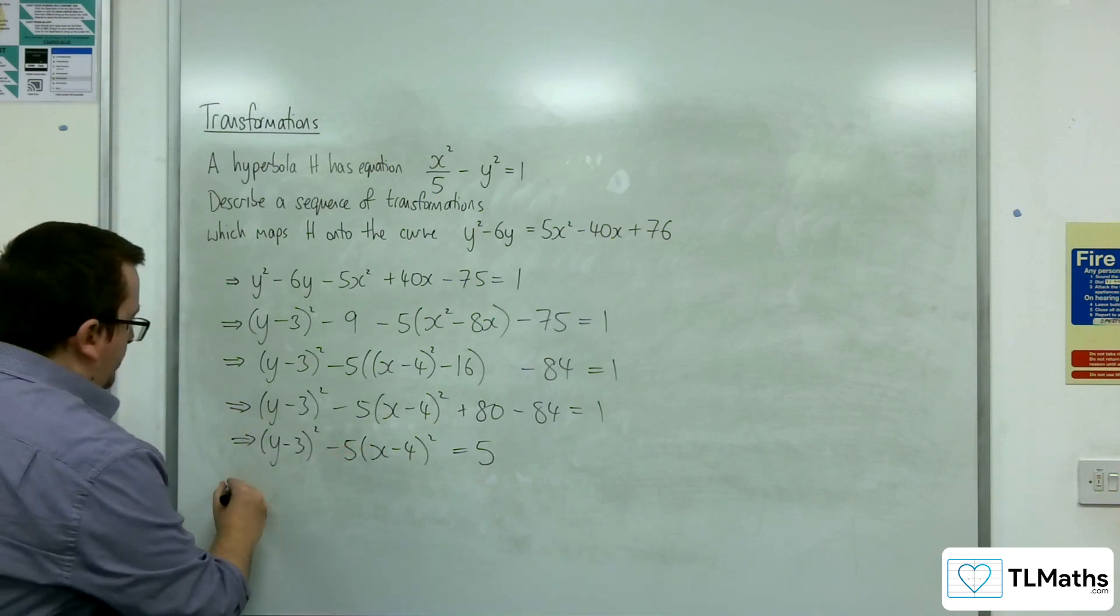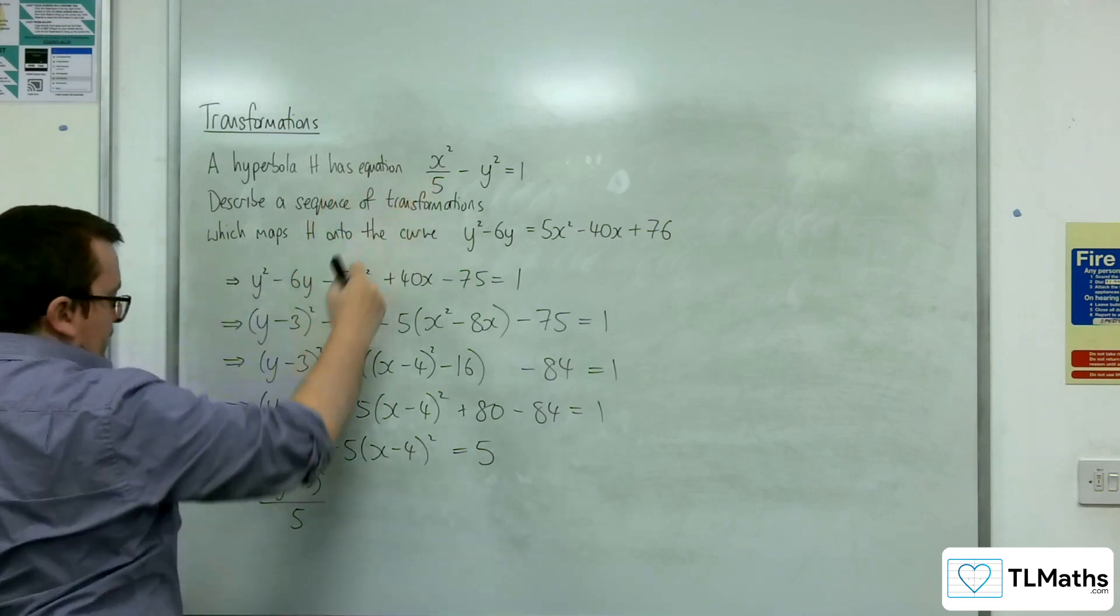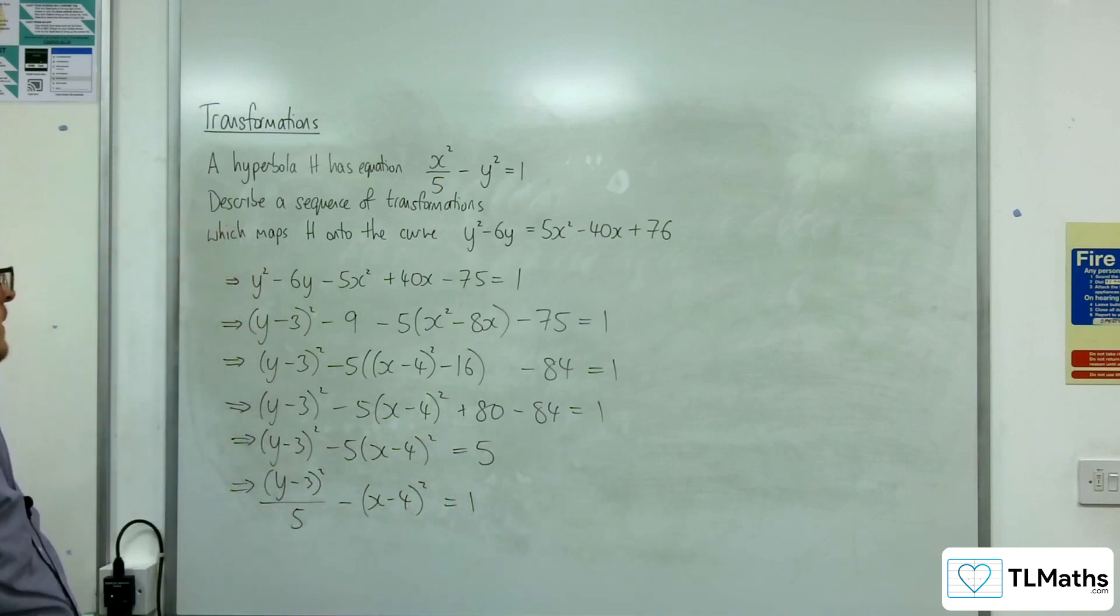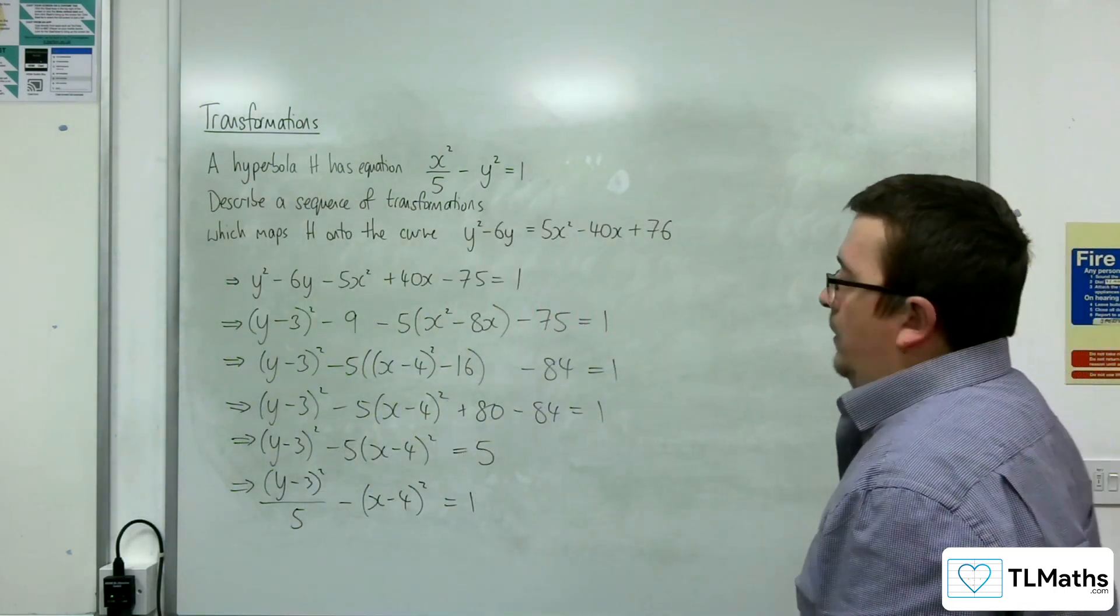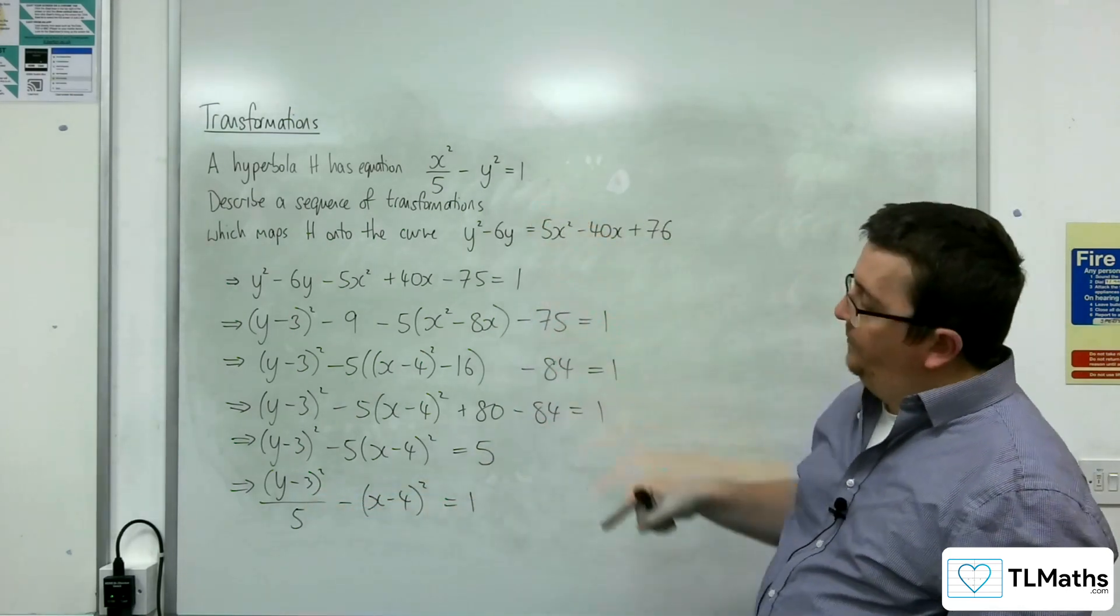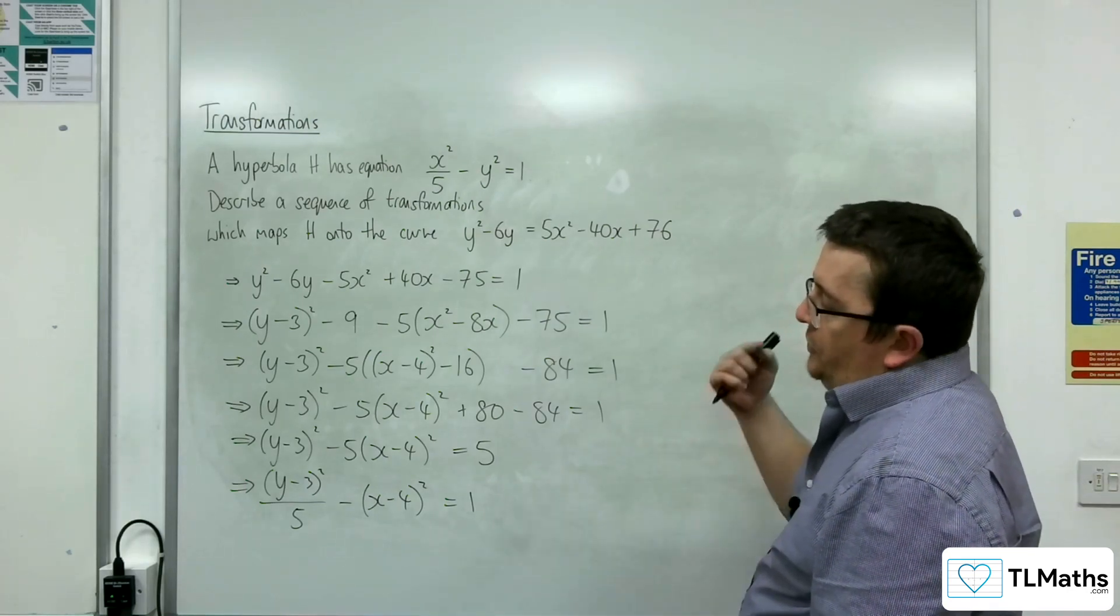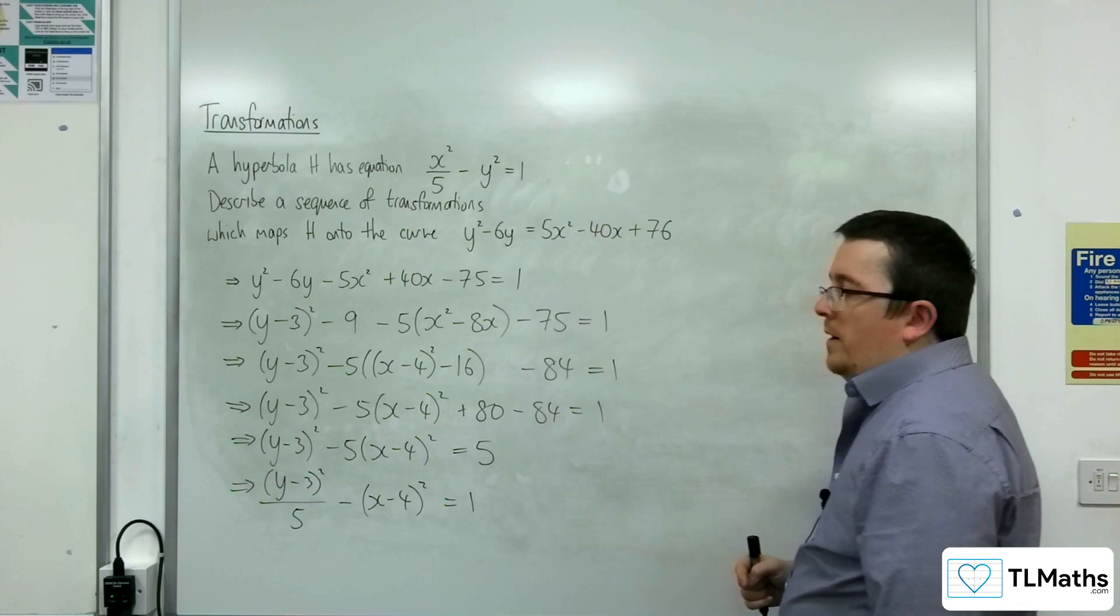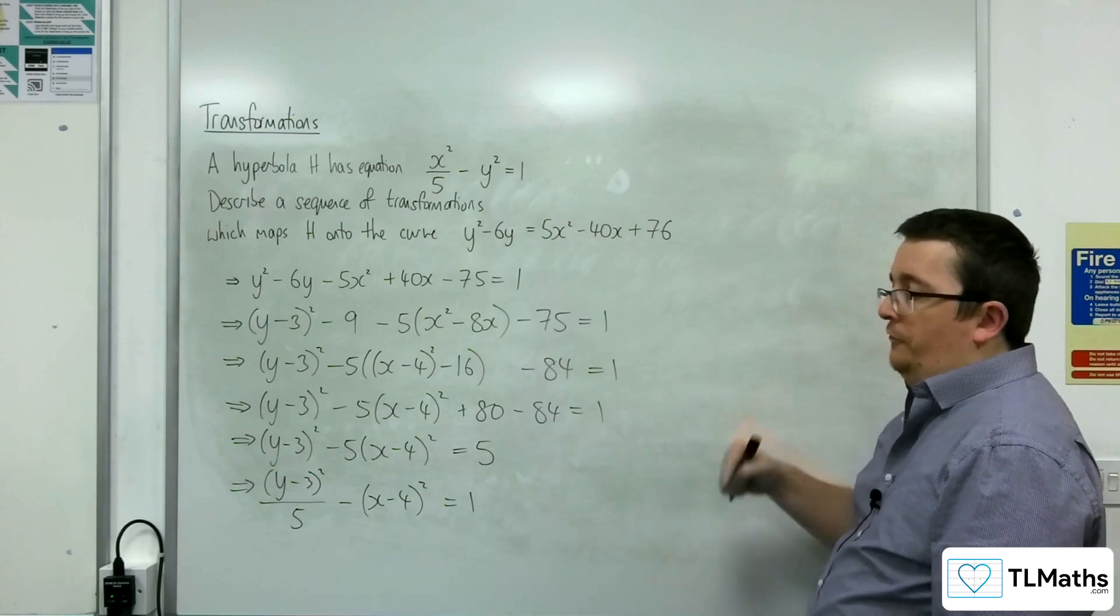Now if I divide through by 5, I get the y minus 3 squared over 5, which is what I wanted. Take away x minus 4 squared is equal to 1. So now we've got it in this form. You can see how closely it resembles this. So we've definitely had a reflection in the line y equals x. But the x has been replaced also with x minus 4. And the y has been replaced with y minus 3. So that would be a translation by the vector 4, 3.